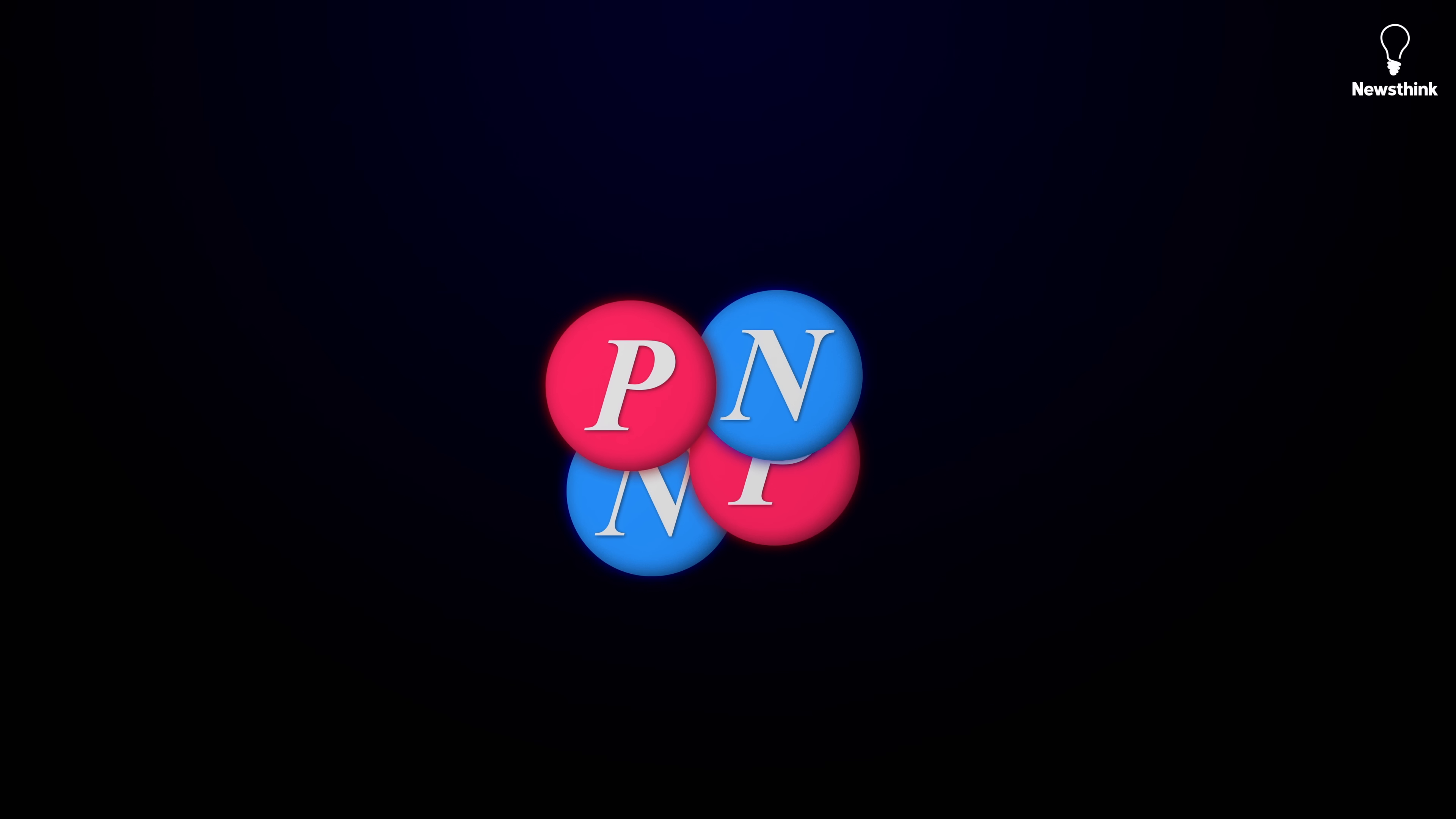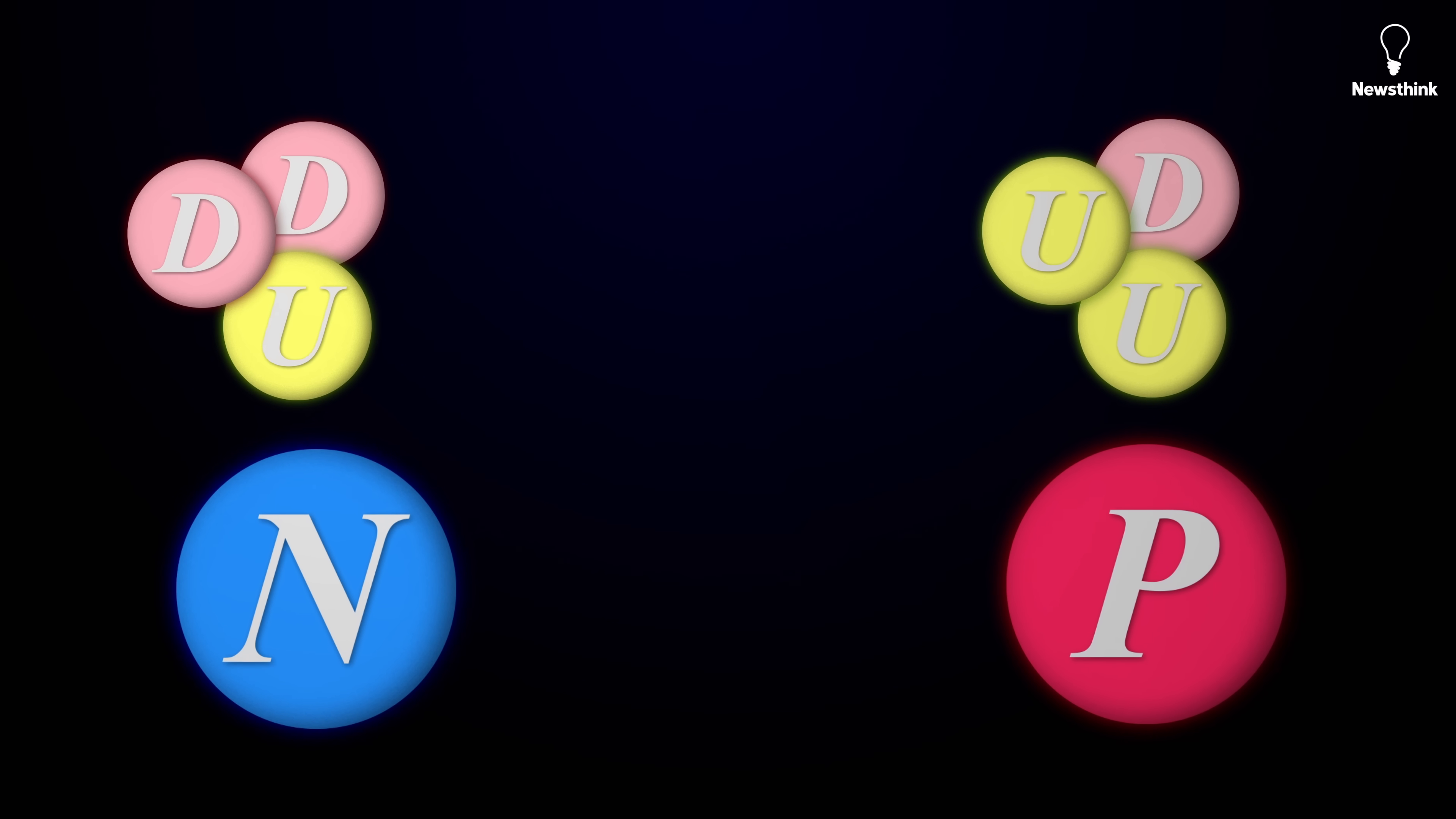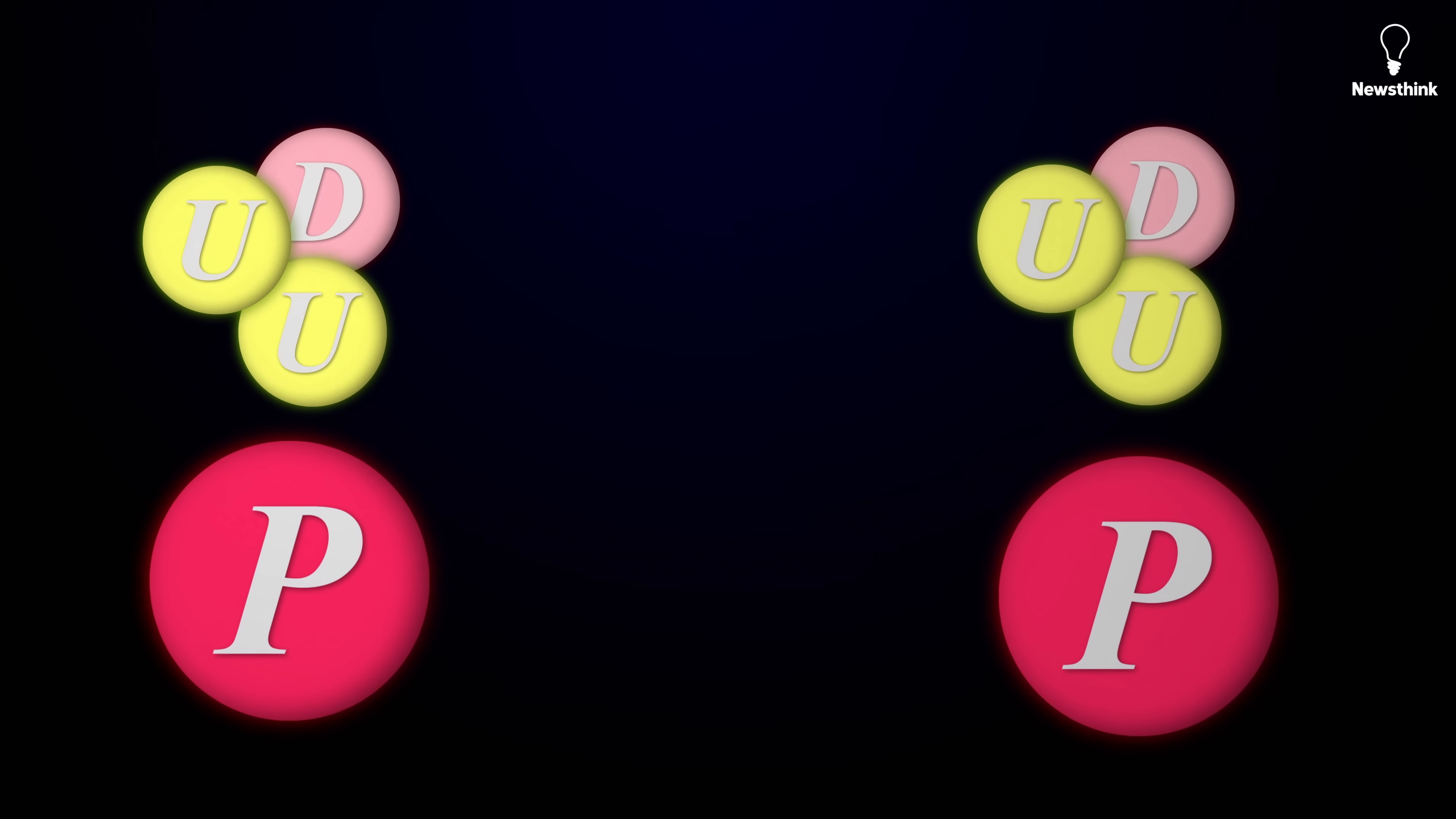If the strong force is what holds atomic nuclei together, the weak force is what allows them to change. Protons and neutrons are each made up of smaller particles called quarks. Two up quarks and one down for a proton, and two down and one up for a neutron. The weak force can flip a quark from one type to another. It can turn a down quark inside a neutron into an up quark, transforming the neutron into a proton, and changing its charge from neutral to positive. This is the process of powering Earth's sun. The weak force drives the nuclear reactions that let it shine.